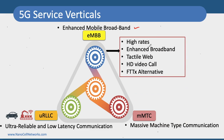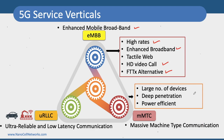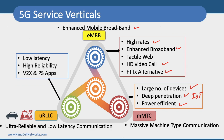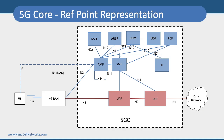eMBB, Enhanced Mobile Broadband, is used for high data rates, HD video calls, and is typically an alternative to FTTx — fiber to the x. mMTC talks about IoT kind of applications: large number of devices, deeper penetration, and power-efficient end-user devices. URLLC is a completely new service vertical in 5G focused on highly reliable and low-latency networks, suitable for V2X applications, industrial automation, and public safety applications such as MCPTT — mission critical push-to-talk services.